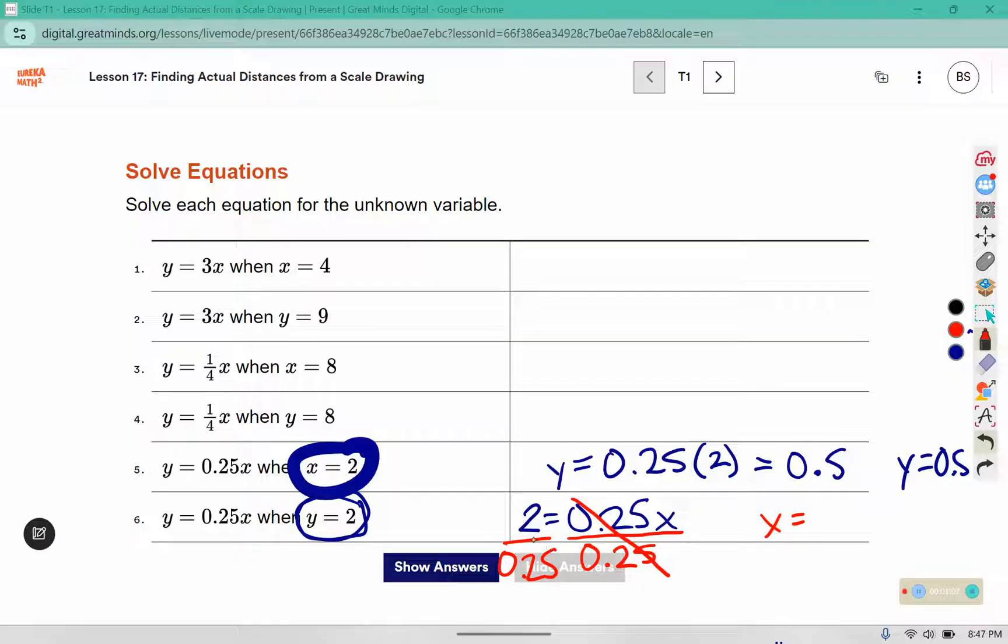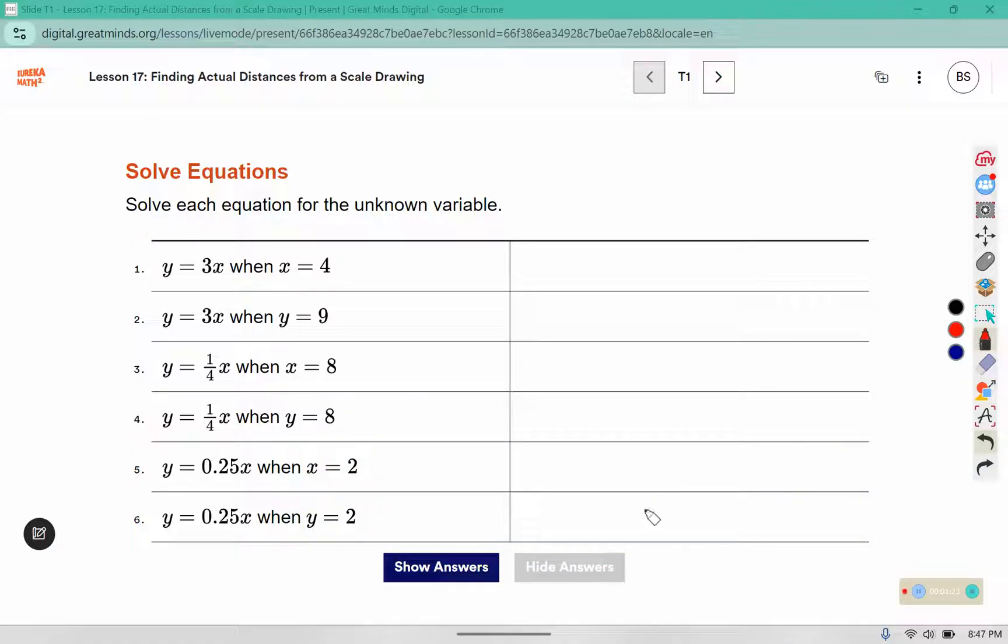0.25 is like a quarter. If I divide 2 by a quarter, that's like multiplying it by 4, so I would get X is equal to 8. So if it gives you the Y, plug it in for Y and divide. If it gives you the X, plug it in for X and multiply.